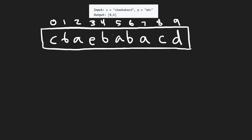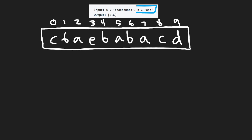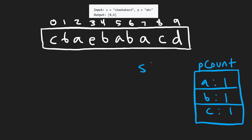First, we know we have to determine if a substring is an anagram of P, and the character count is the best way to do that. We're going to use a hash map to represent the count. We'll call it P count, to count the occurrences of each character — one A, one B, one C. We'll maintain a similar hash map for every substring we look at in S, also counting character occurrences.